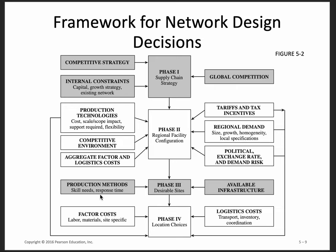Phase two is regional facility configuration. Once you've decided on your supply chain strategy, you need to decide what kinds of facilities you're going to have — manufacturing facilities, warehouses, offices, sales locations, call centers — and where they're going to be located. Then phase three is figuring out the suitable sites, and phase four is choosing which of those location choices you're going to select. A lot of what we're going to talk about today falls within phases two, three, and four — mostly within phase two.